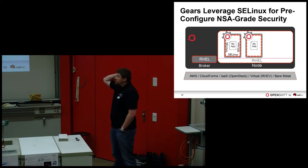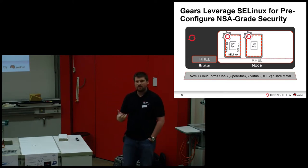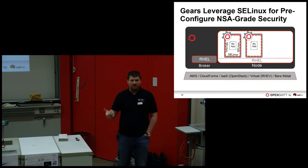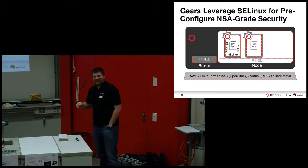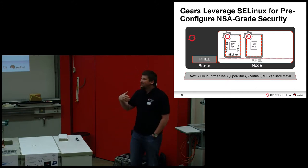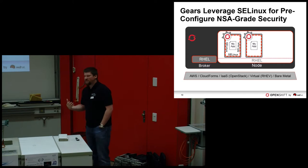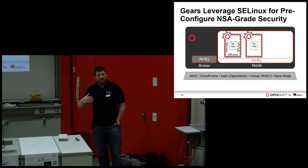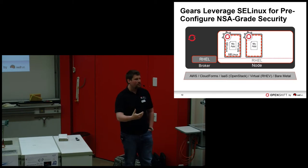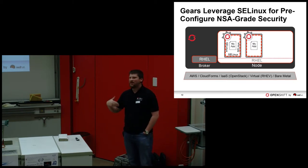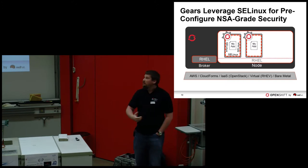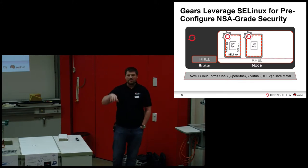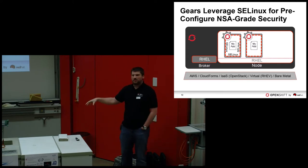These small environments inside the operating system are secured using SELinux — a project developed in cooperation with the American NSA, which may not have a great name in Europe right now, but they really take security seriously. This system is proven and solves many security problems. We use SELinux to isolate applications inside an operating system so we can deploy multiple applications into one OS. We also use cgroups, part of the Linux kernel, to provide resource isolation — you can define how much memory, CPU, and IO each application can use.